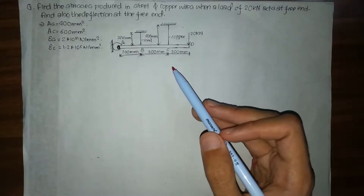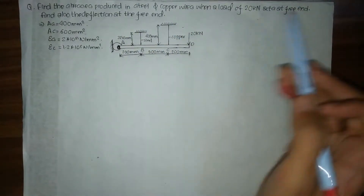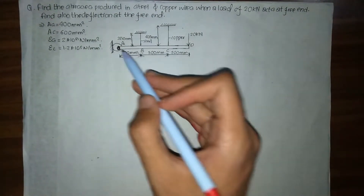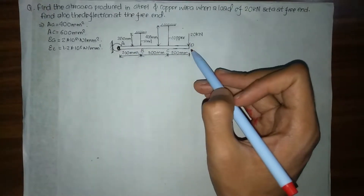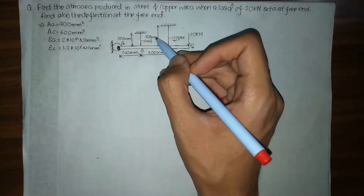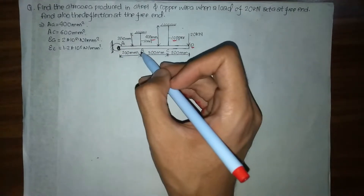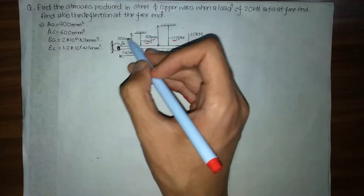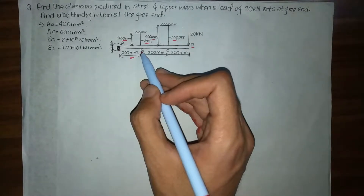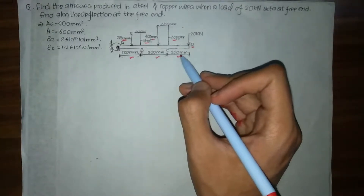Right now we are going to solve this question. Our question states: find the stresses produced in steel and copper wires when a load of 20 kN acts at the free end D. We also need to find the deflection at the free end. We have a fixed support at A, a copper wire at C which is 400 mm from the fixed support, and a steel wire at B which is 250 mm from the fixed support. Portion B is 200 mm from A, portion C is 300 mm from B, and portion D is 200 mm from C.